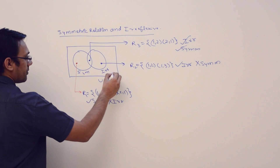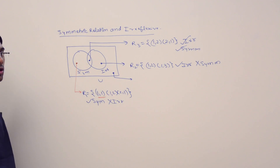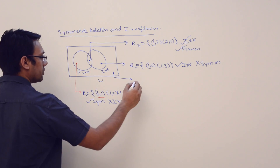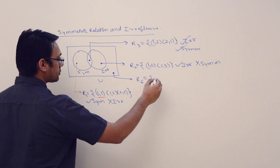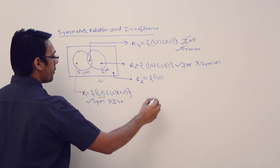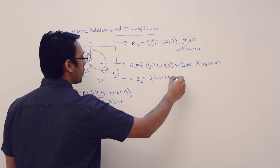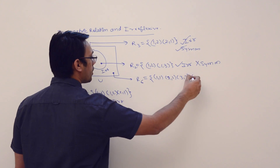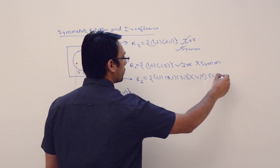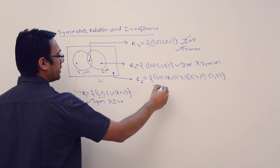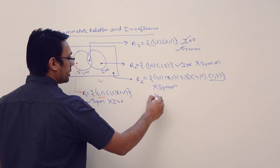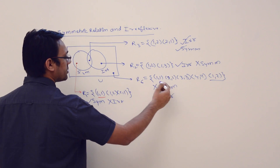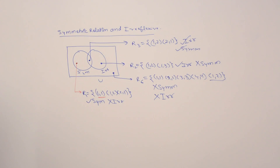Now can I give an example of a relation which is neither symmetric nor irreflexive? Yes. Consider R6 = {(1,1), (2,3), (3,4), (4,1), (2,2)}. This relation is not symmetric because it does not have the pair (2,1), and it is not irreflexive because it contains the pairs (1,1), (2,2), and so on. So we can give an example of each region like this.